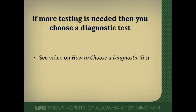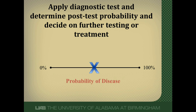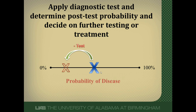Once I decide testing is indicated, I have to choose a diagnostic test. For cardiovascular disease there are several options, and I have a separate video going through a systematic approach to choosing one. Once I've chosen a test and get the result, I alter my pre-test probability into a post-test probability and make decisions. If the test is positive, my probability of disease goes up, and if it crosses the treatment threshold, I treat my patient. If the test is negative, my probability goes down, and if it falls below my test threshold, I consider the patient doesn't have the disease. It's very important to be accurate about where you start so you can make sense of where you end based on a positive or negative test.